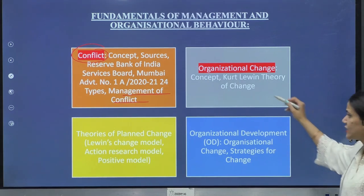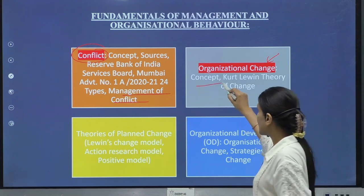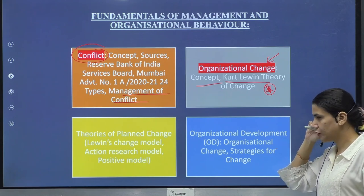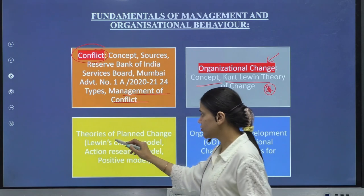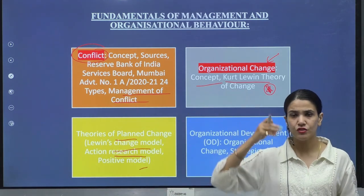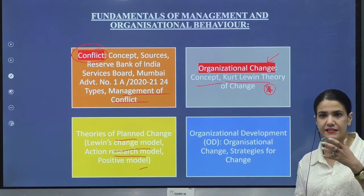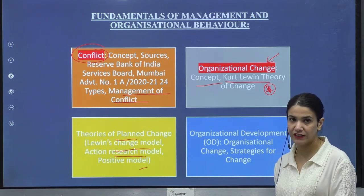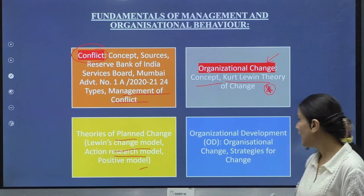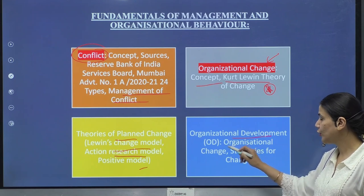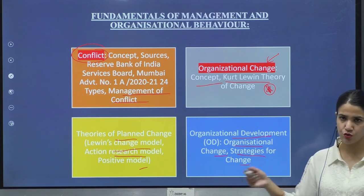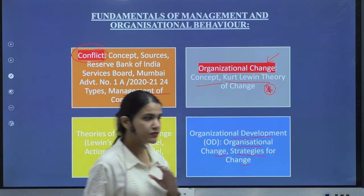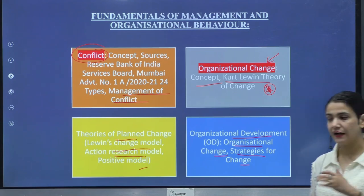Organizational change is a very important topic where you will study the concept, the Kurt Lewin theory — which is very, very important, as you can always expect certain questions from it — and theories of planned change: Lewin's change model, action research model, and positive model. You need to know these models, and when you revise them and practice enough objective and subjective questions, this will be very significantly helpful. Another topic under OB is organizational development, covering strategies for change. The syllabus is confined and not at all lengthy, and you can easily cover it — just be regular in your preparation.